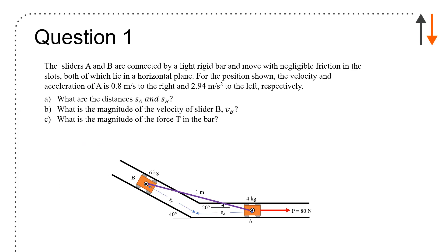We have two sliders connected by a light rigid bar that move with negligible friction in slots, both in a horizontal plane. For the position shown, the velocity and acceleration of A, which is at the bottom right, is 0.8 meters per second to the right and 2.94 meters per second squared to the left. What's the distance s_a and s_b? What is the magnitude of the velocity of slider B, v_B? What is the magnitude of the force in the bar? Lots to cover in this problem.